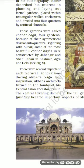These gardens were called Char Bagh, or four gardens, because of their symmetrical division into quarters. Beginning with Akbar, some of the most beautiful Char Bagh were constructed by Jahangir and Shah Jahan in Kashmir, Agra and Delhi.